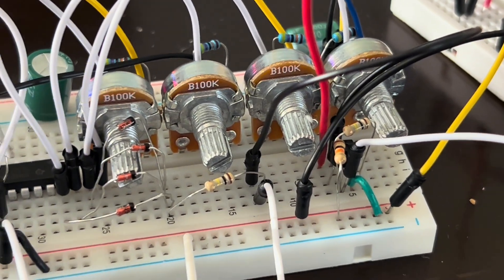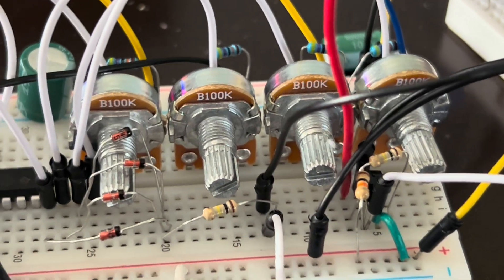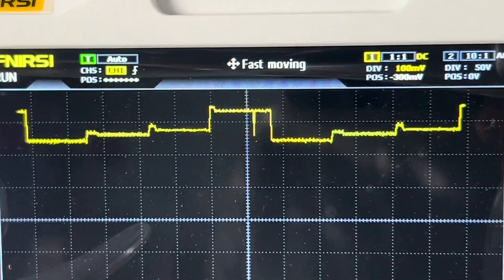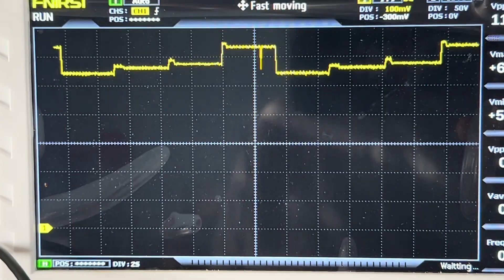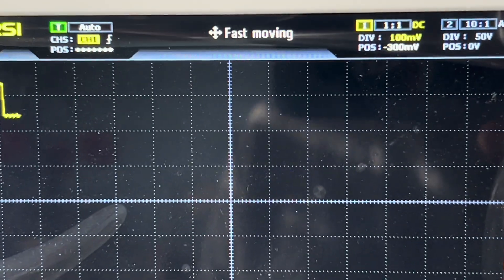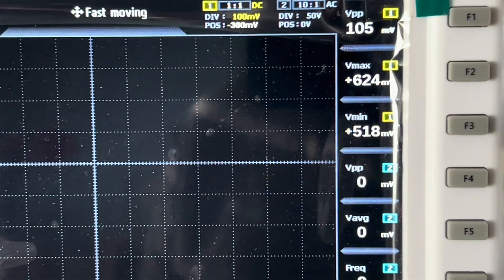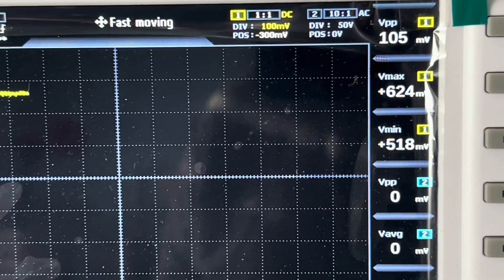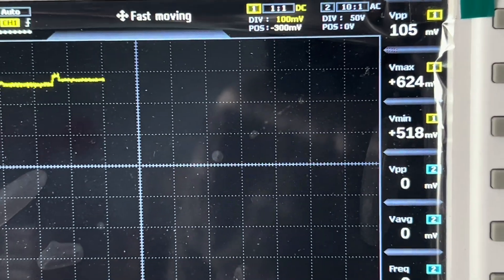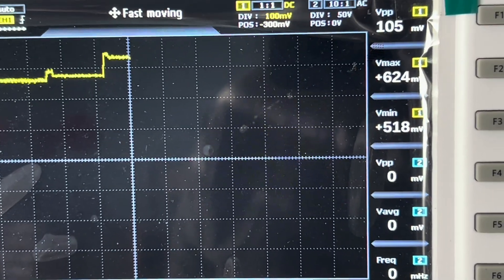Only apply a very small voltage change here. As you can see, I have a division set to 100 millivolts, and it's basically cycling between 518 and 624 millivolts. That's it - that's the very tight range.